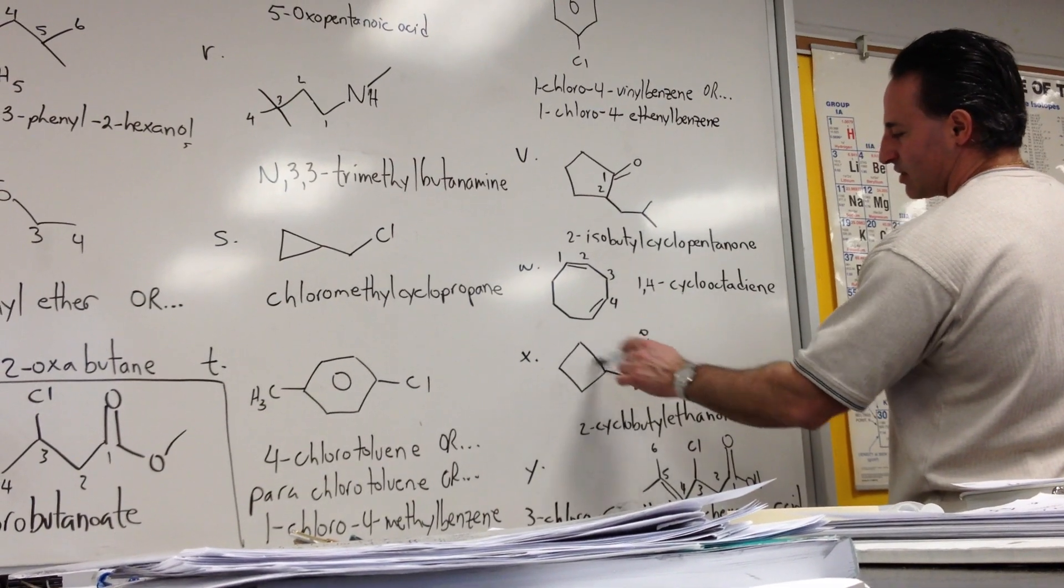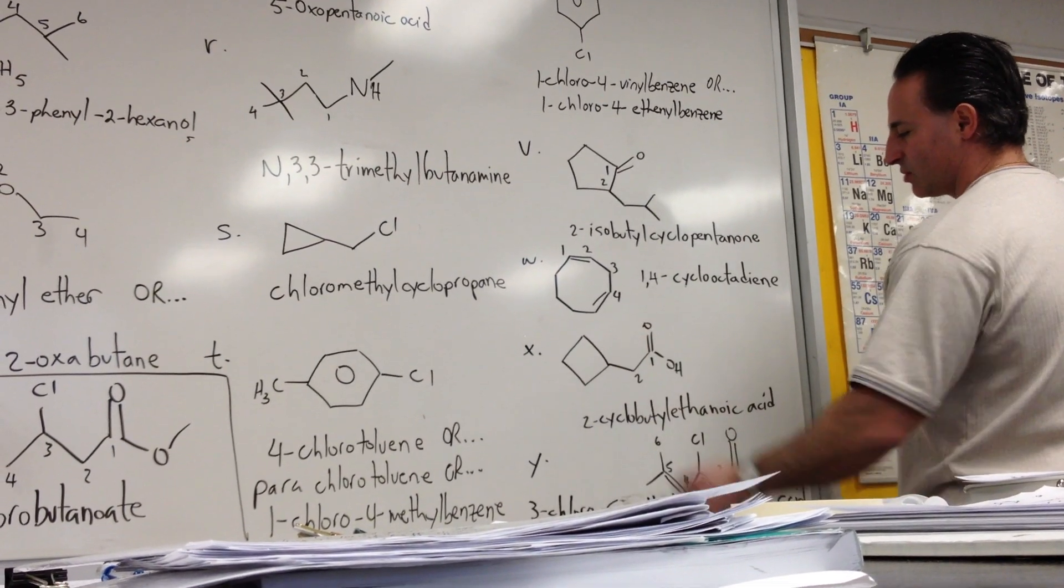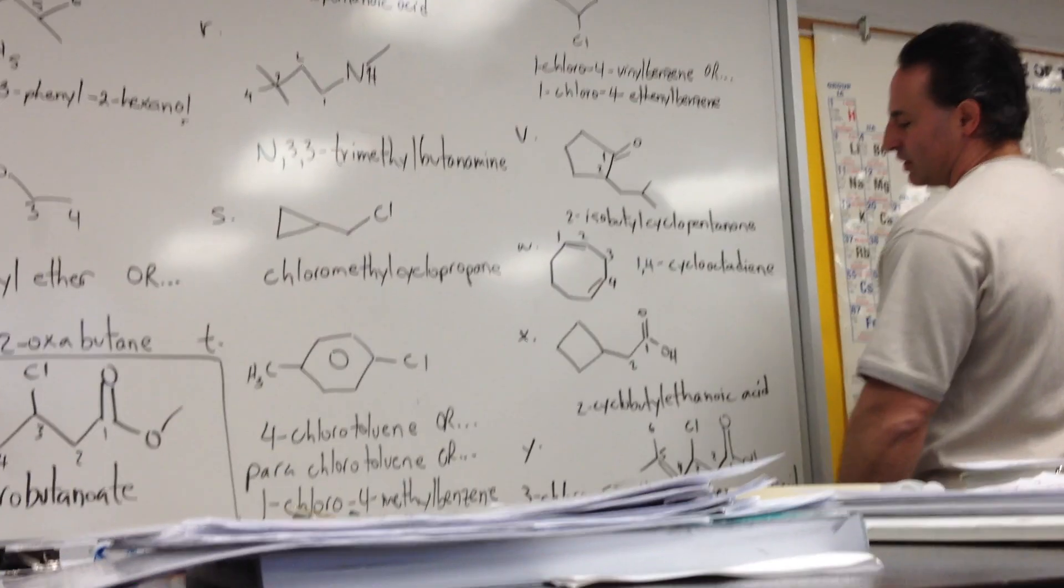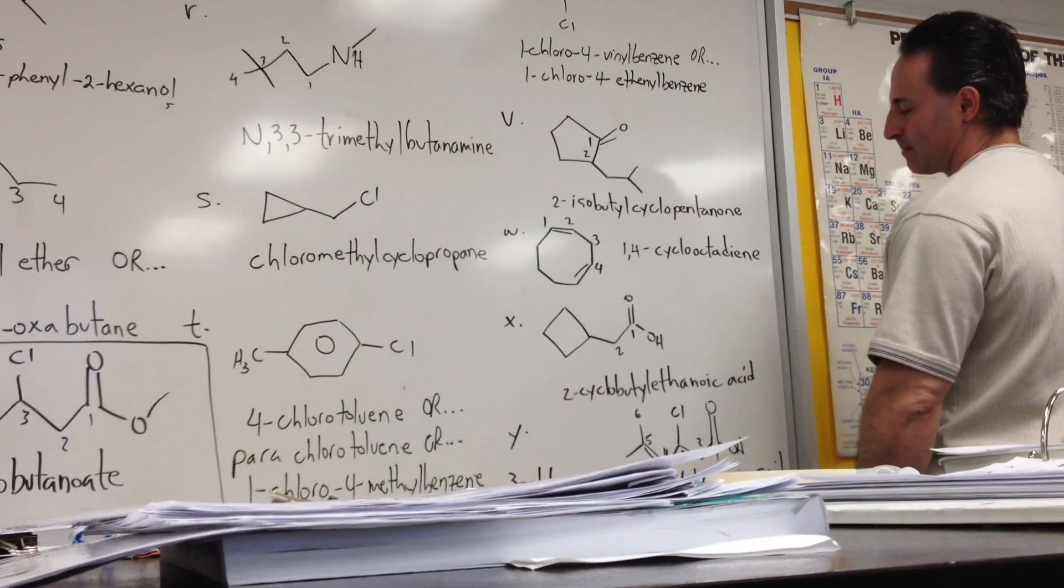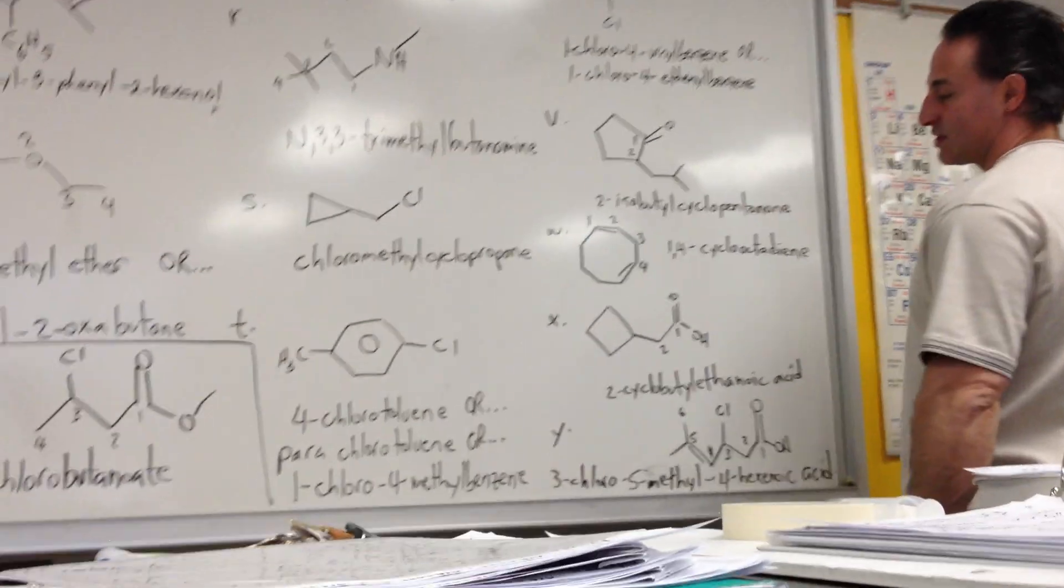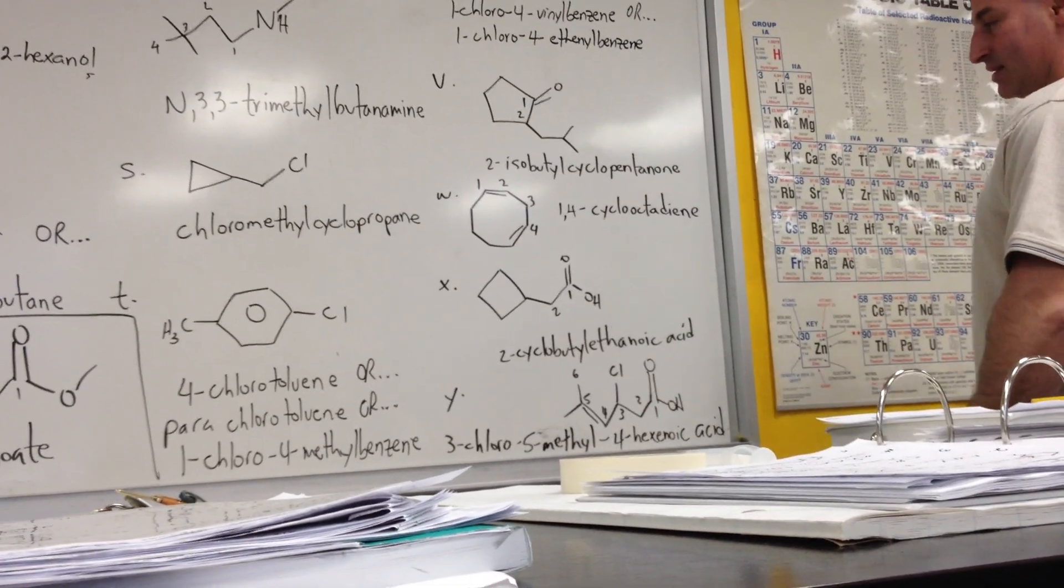This is an ethanoic acid with a cyclobutane group at the second carbon, so we call it 2-cyclobutyl ethanoic acid. Actually, you can probably dispense with the 2, because if you were to put it at the first position, then it would be called cyclobutane carboxylic acid.